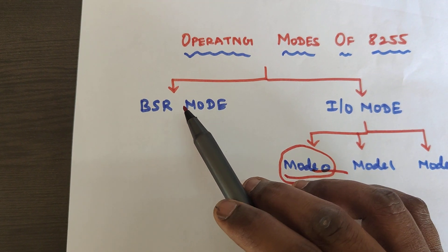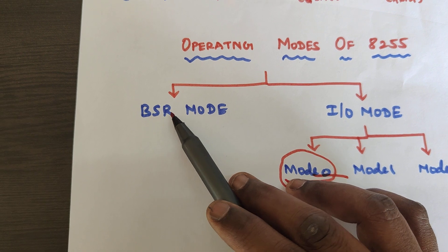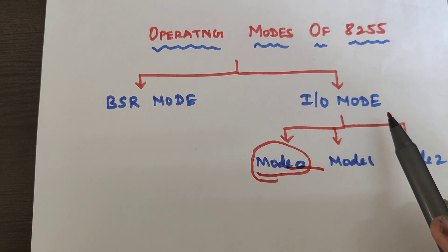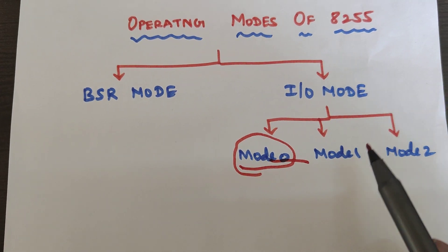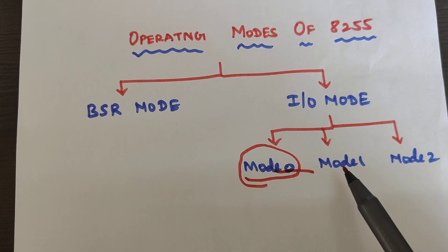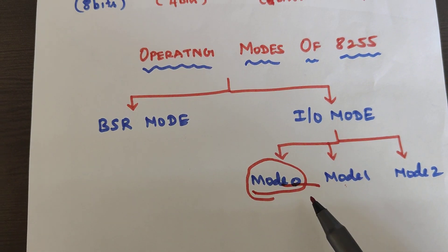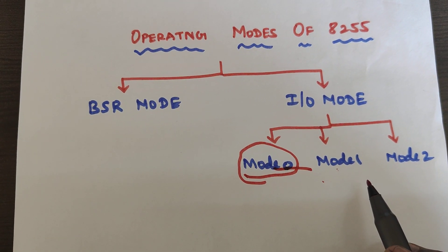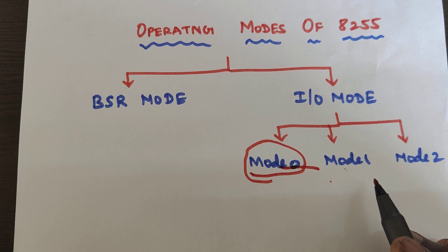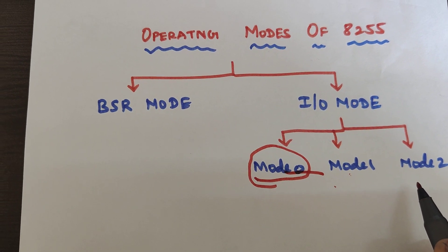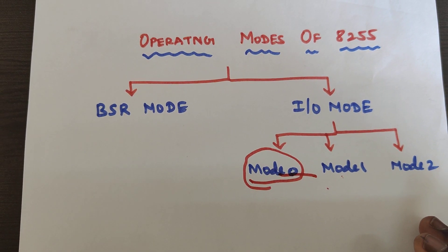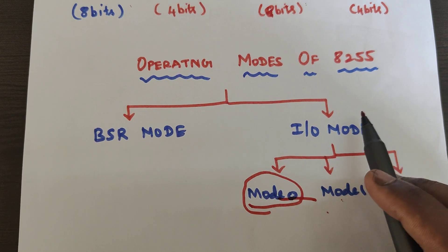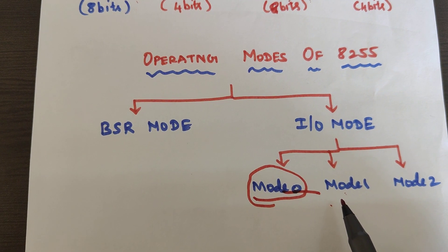The 8255 parallel communication interface has two operating modes: BSR mode (bit set reset mode) and input/output mode. The input/output mode has three types: mode 0, mode 1, and mode 2. Mode 0 is called simple input/output, mode 1 is called strobe input/output, and mode 2 is called bidirectional strobe input/output. Today we are writing the program using mode 0.